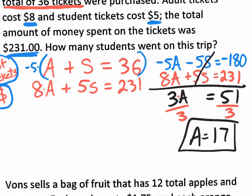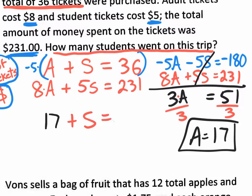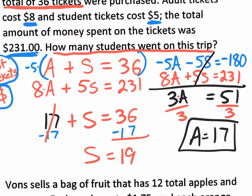If you say the answer is 17 and put it on the answer spot — it's wrong — because the question asks how many students went on this trip. We know adults = 17. Plug that back into the top equation: 17 + S = 36. Subtract 17 from both sides: 36 minus 17 is 19. So S = 19. There are 19 students.